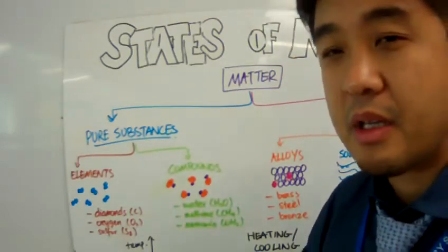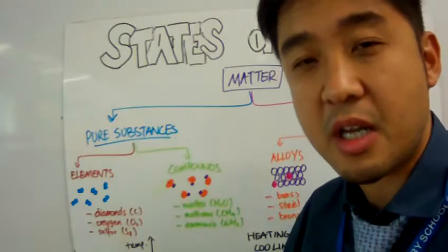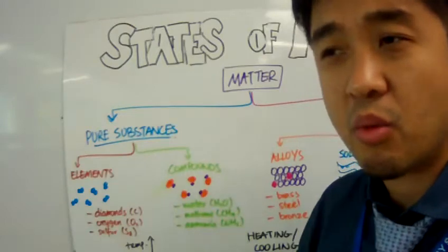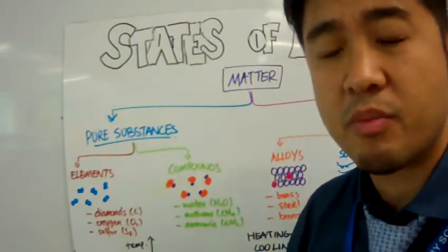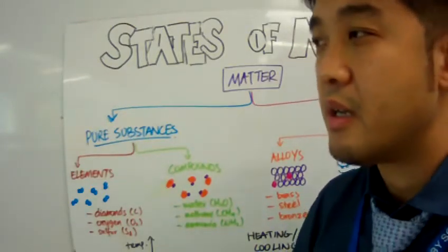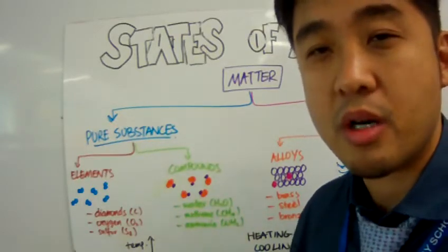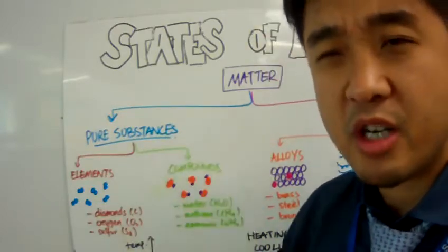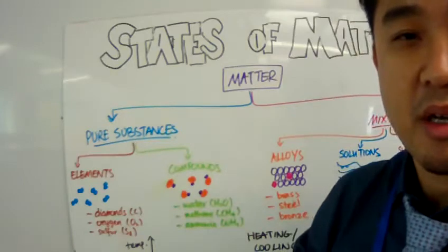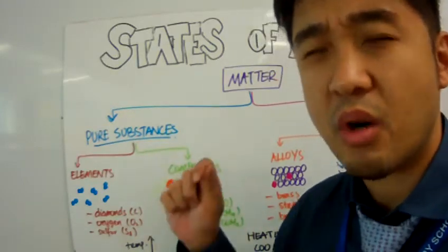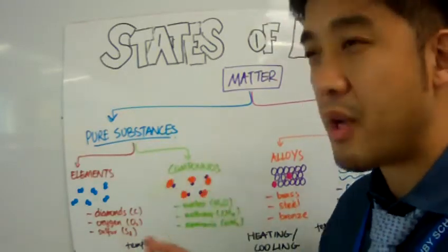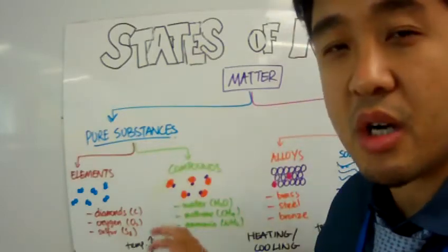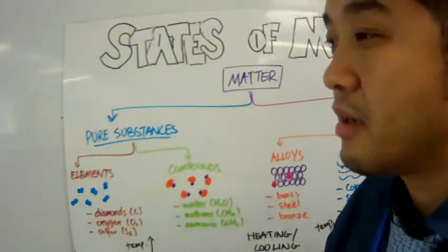For example, water in the solid phase or solid state will be H2O. When you melt the water ice to liquid water, the chemical composition of water will still be H2O. If you boil that water and turn the liquid water into water vapor, the chemical composition will also be H2O. No matter what the physical state of these compounds are, the chemical composition will remain the same.